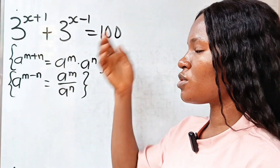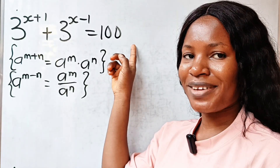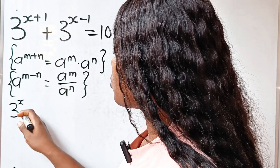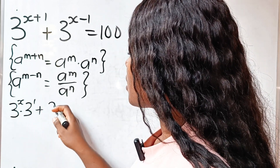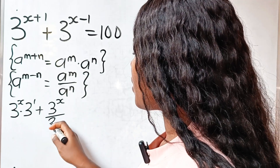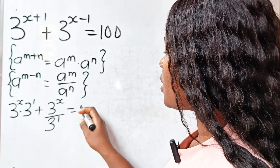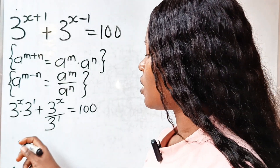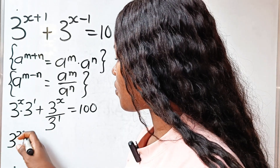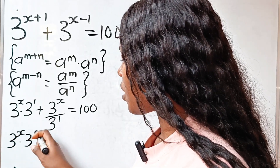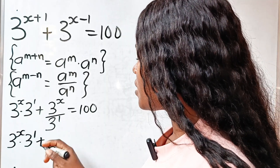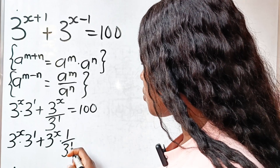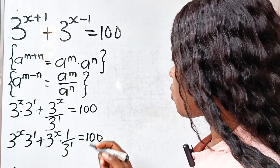We are going to apply these two laws into this equation to solve it. So we have 3 to the power of x multiplied by 3 to the power of 1, plus 3 to the power of x divided by 3 to the power of 1, is equal to 100. This is the same as 3 to the power of x multiplied by 1 over 3 to the power of 1, which is equal to 100.